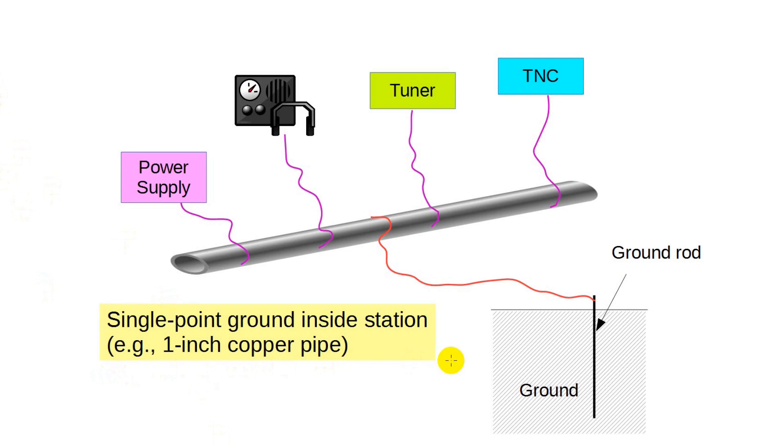You may also have heard of ground loops, where daisy chaining grounds together can create current loops, which in turn act as loop antennas. So we come back to the concept of a single point ground. In this diagram, we see a single point ground, for example, a length of one inch copper pipe, such as is used in household plumbing. The pipe is the station's single point ground. A stout wire or strap connects this to the ground rod. And then everything in the shack connects to the single point ground.